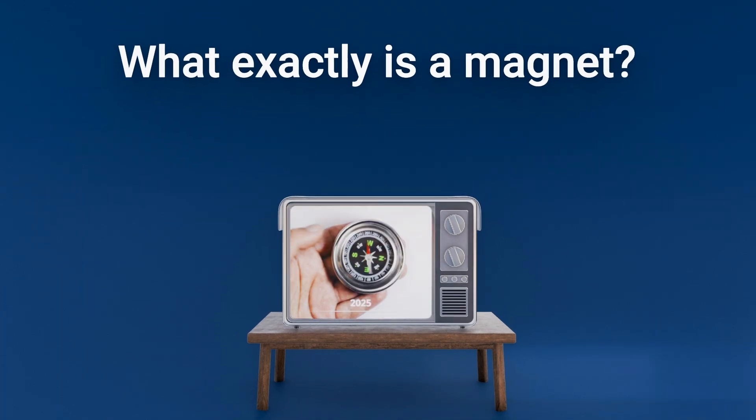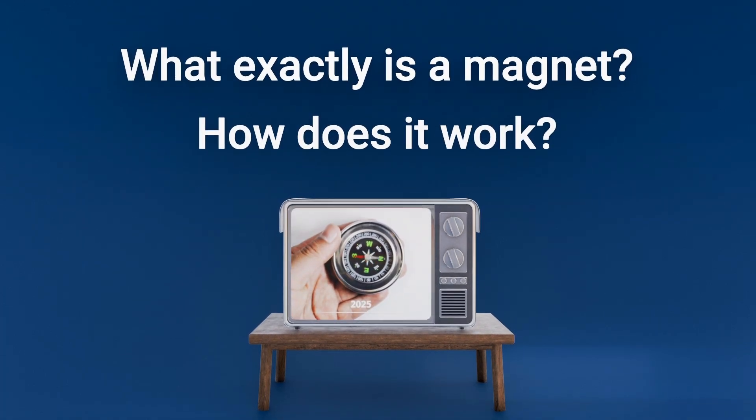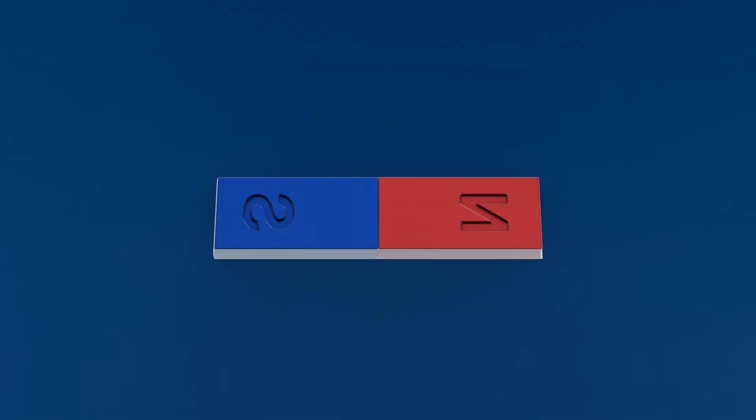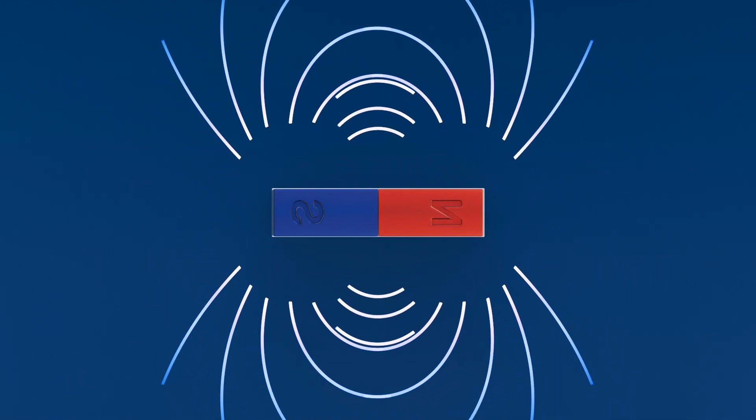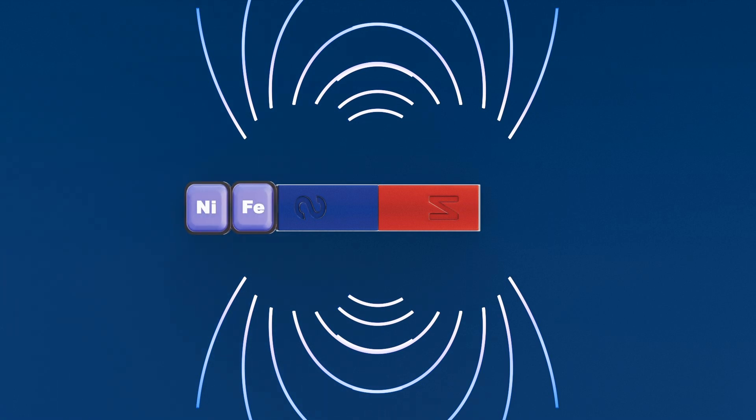But what exactly is a magnet, and how does it work? At its core, a magnet is an object that produces a magnetic field, a force field that can attract or repel certain materials like iron, nickel, and cobalt.